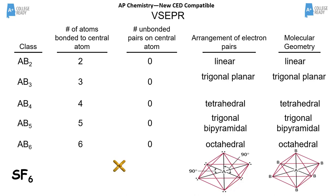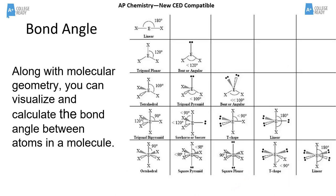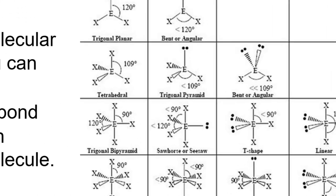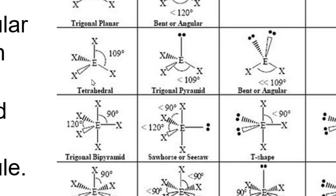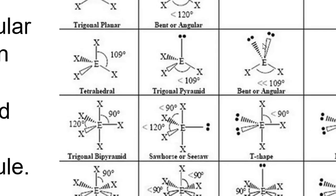Students need to picture molecules and estimate bond angles. Bond angles can change based on which elements are involved, because a bigger electron cloud creates a greater repulsive force. In a tetrahedral the bond angle is 109.5°; in a trigonal pyramidal with one lone pair it's slightly less than 109.5°; and in a bent or angular shape with two lone pairs it's even less, because each lone pair has a greater repulsive force.